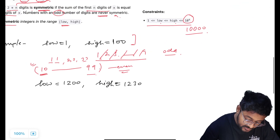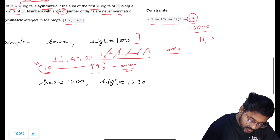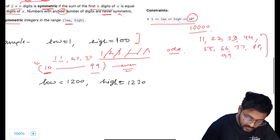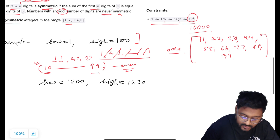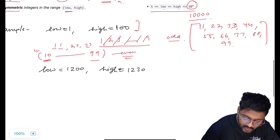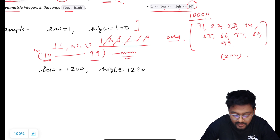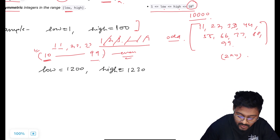So the answer for the first example would be 11, 22, 33, 44, 55, 66, 77, 88, and 99. There won't be any other possibility because we have an even number of digits and only one digit on each side, so both must be the same. This gives us an answer of 9 for the first example.